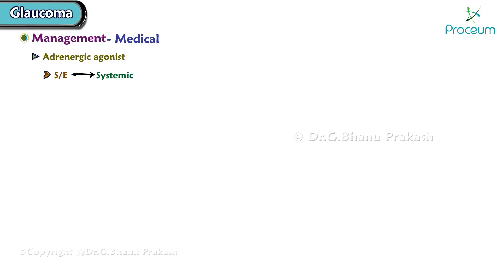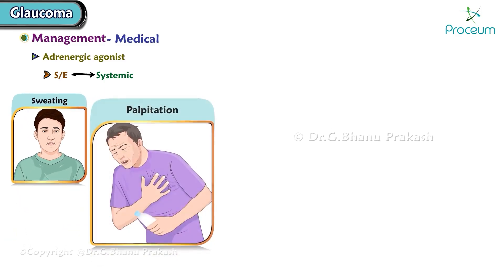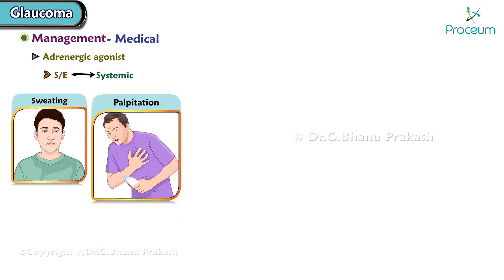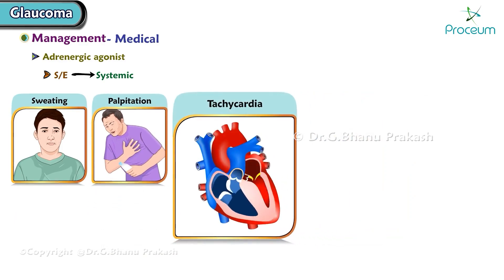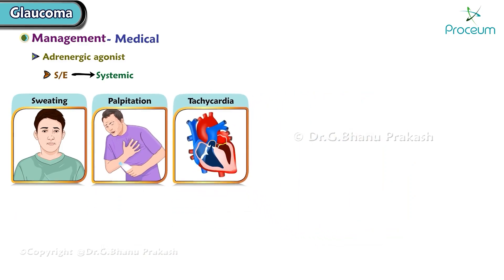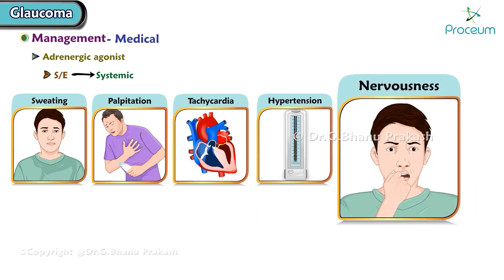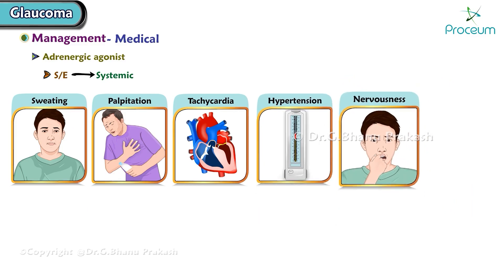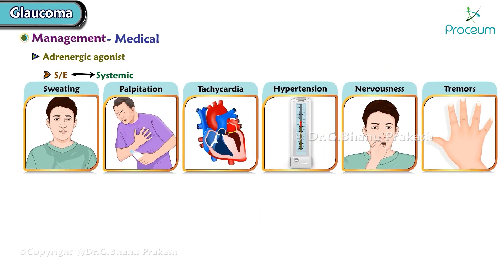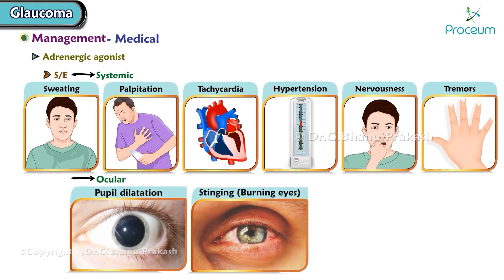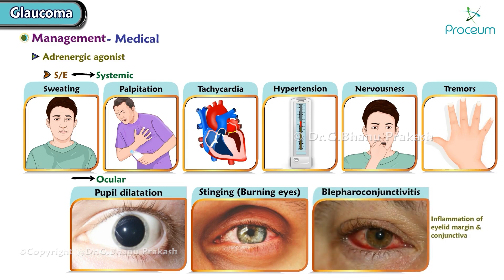Systemic side effects of adrenergic agonists include sweating, palpitation, tachycardia, hypertension, nervousness, and tremors. Ocular side effects include pupil dilatation, stinging, and blepharoconjunctivitis.